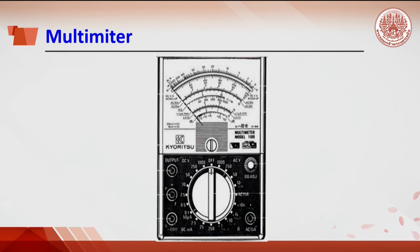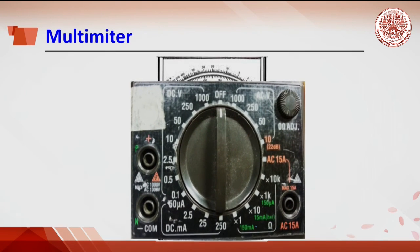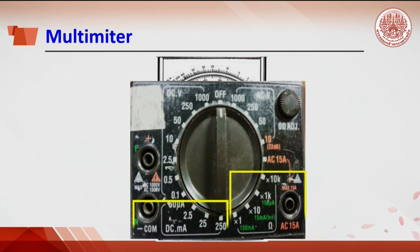Before measuring the electromotive force or EMF of the galvanic cell, students need to know how to read and use the multimeter. A multimeter is a device to measure electrical data, like a voltmeter, ammeter, and ohmmeter. From left to right on the bottom is for measuring current and resistance. The top is used to measure AC voltage and DC voltage. In this experiment, DC voltage is used.